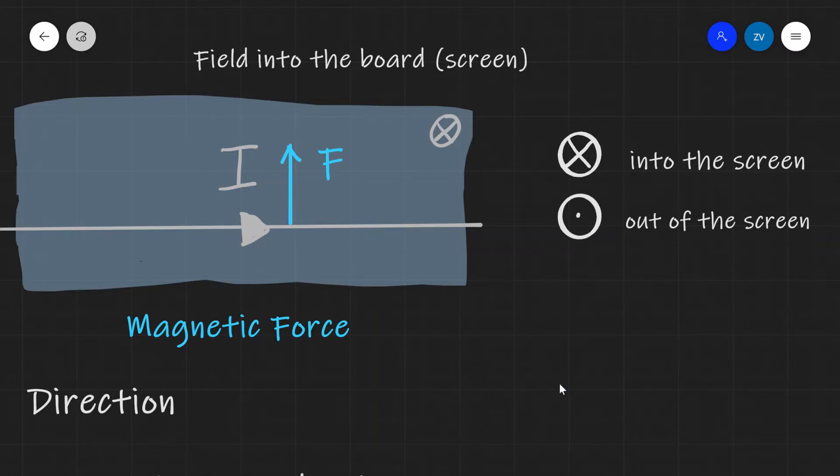Imagine that we have a current-carrying wire which we have placed in an external magnetic field. For the purposes of this video, let me just remind you that this symbol over here means that something is directed into the screen, and this symbol here means that something, such as this magnetic field, is directed out of the screen.